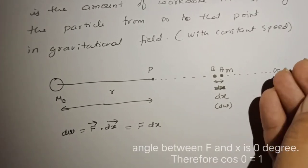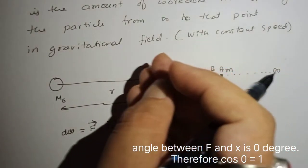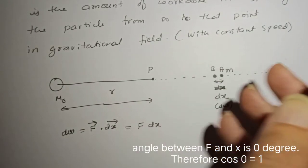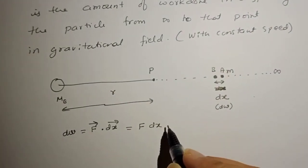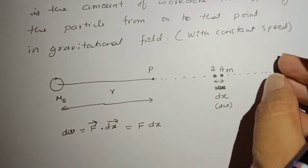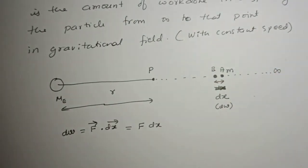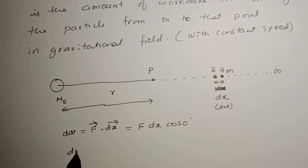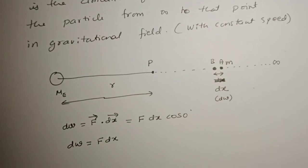The work done here is by the external agency. The angle between the external force and the displacement is 0 degrees, because I'm trying to displace the particle from infinity to this point. Therefore cos 0 = 1, and dW will be equal to F dx.